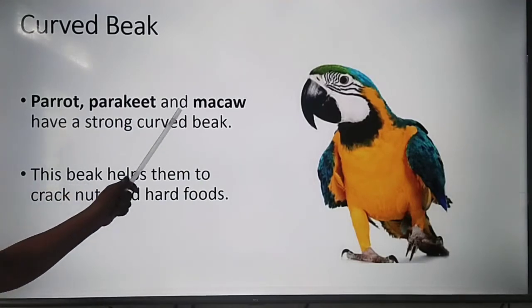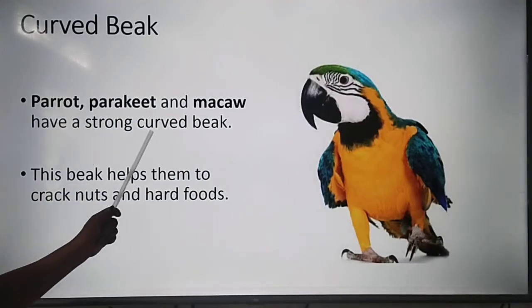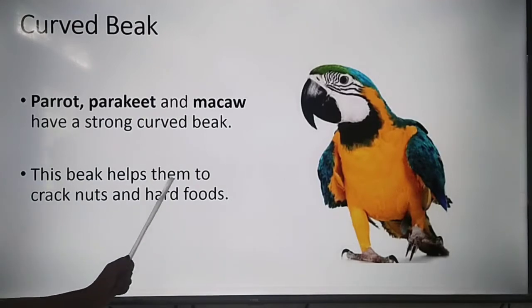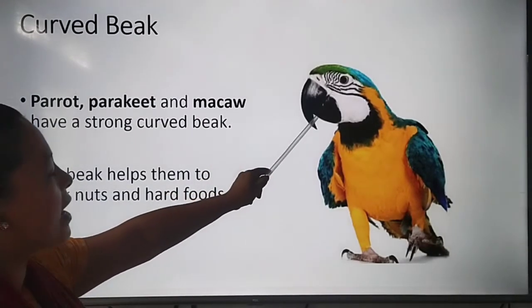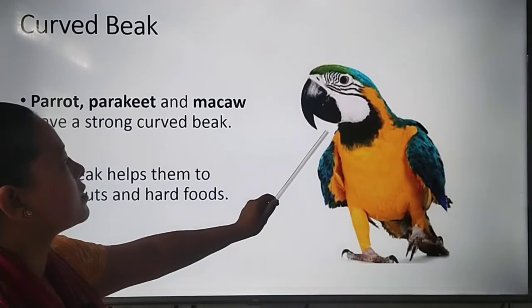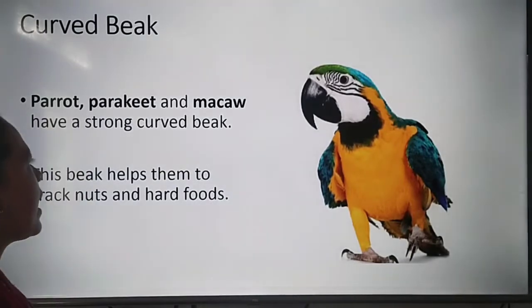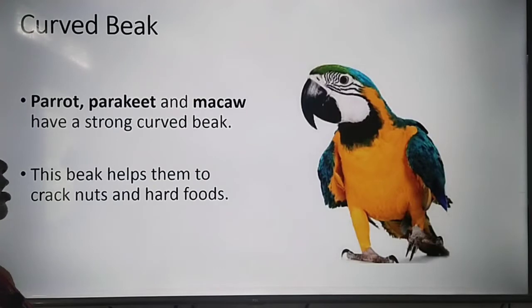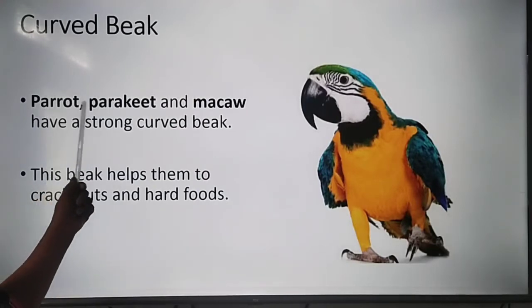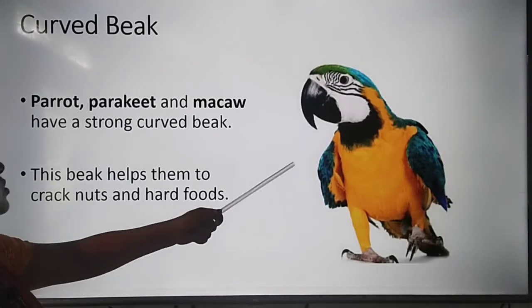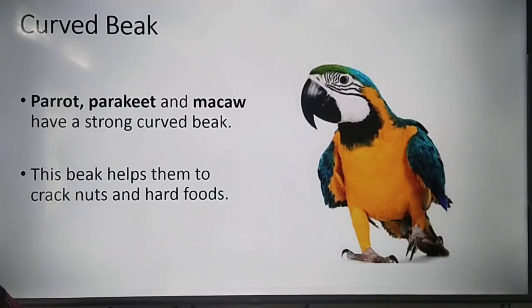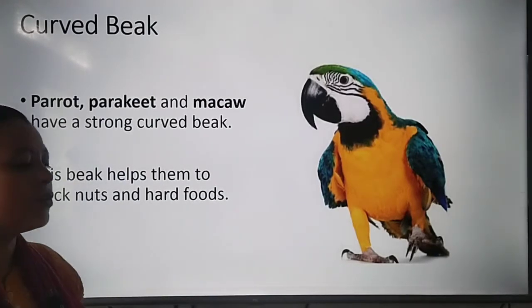Next is the curved beak. Parrot, parakeet, and macaw have a strong curved beak. This beak is short, strong, and curved in shape. This beak helps them to crack nuts and hard foods.